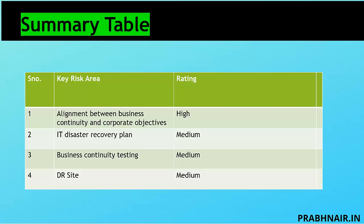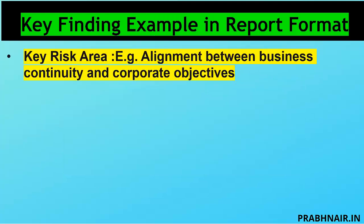During a BCP audit, if you find something very critical, you need to notify immediately — you can document later, but notification is a responsibility. Your report format should first give the heading of the risk identified. For example: 'Alignment between business continuity and corporate objectives.' Then explain the issue — for example, we reviewed key business continuity documentation, had discussions with business owners and DR coordinators, and were unable to confirm the BCP plan has been formally mapped to the corporate plan and strategy.